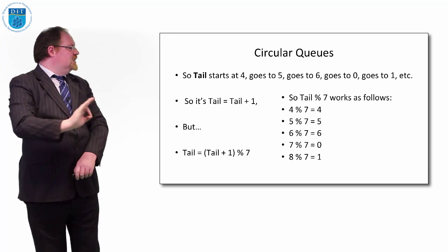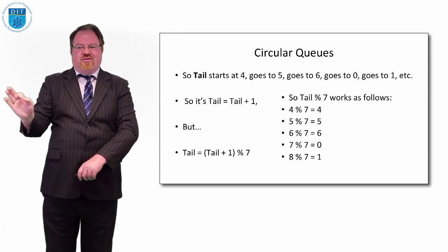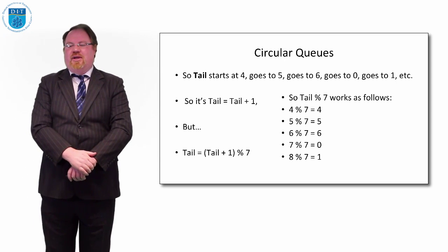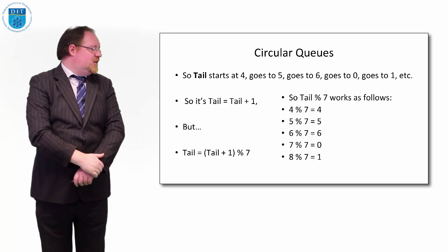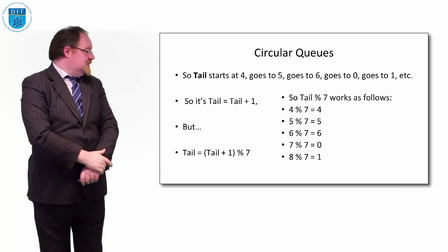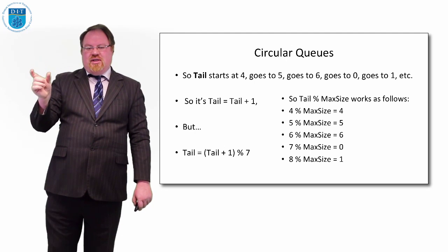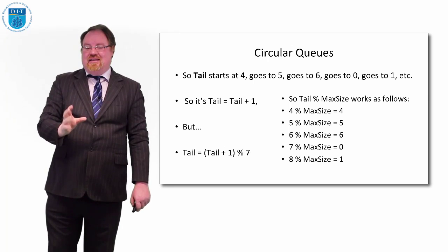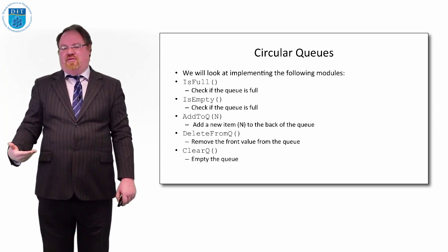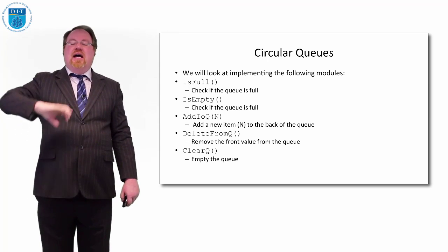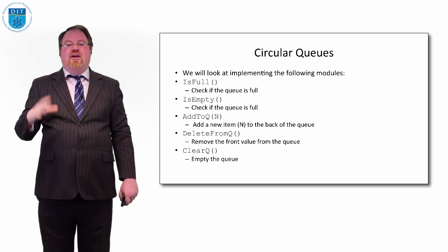When tail is four, the remainder is four; when five, remainder is five; when six, remainder is six; when we divide seven by seven, remainder is zero; eight divided by seven gives remainder one. So we get the pattern four, five, six, zero, one, two, three, four, five, six by doing division remainder by max_size. All the methods are almost exactly the same as for a non-circular queue, except occasionally we'll do division remainder by the max size.